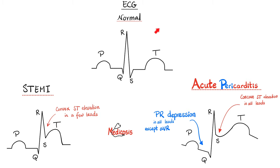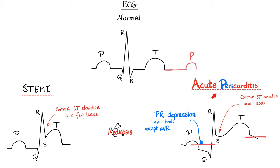A quick EKG lesson. Here is the normal EKG: P-wave, QRS, and then T-wave. The baseline is the line between the T-wave and the following P-wave. In acute pericarditis, the PR interval is depressed — below the baseline — so this is PR depression. We see PR depression in all EKG leads, except AVR, where we see PR elevation. Next, look at the ST segment — it is above the baseline, so this is ST elevation. It is concave, not convex — concave ST elevation in all of the leads. This is acute pericarditis.